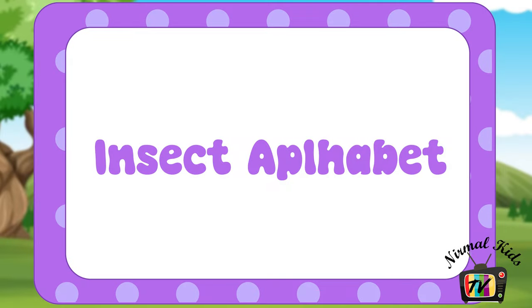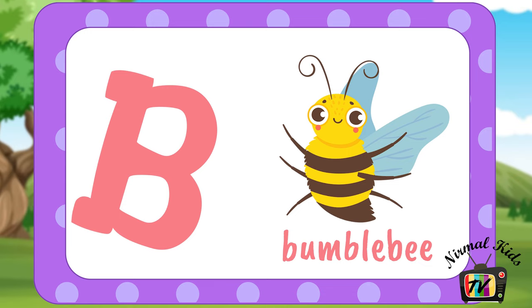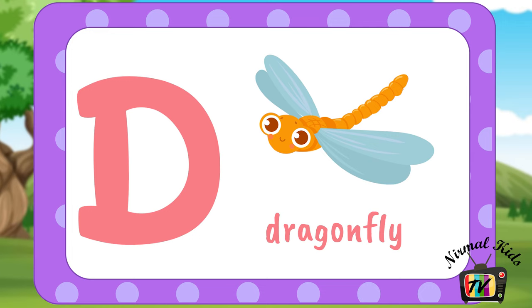Insect Alphabet. A for Ant, B for Bumblebee, C for Cockroach, D for Dragonfly, E for Earthworm, F for Firefly.